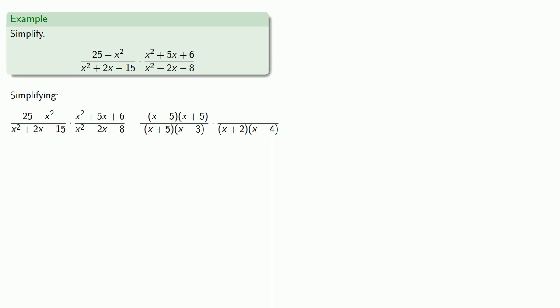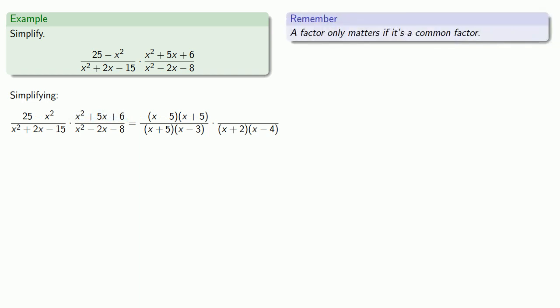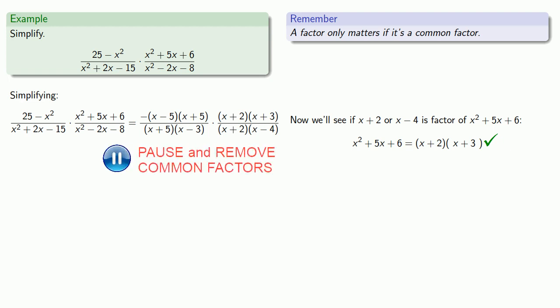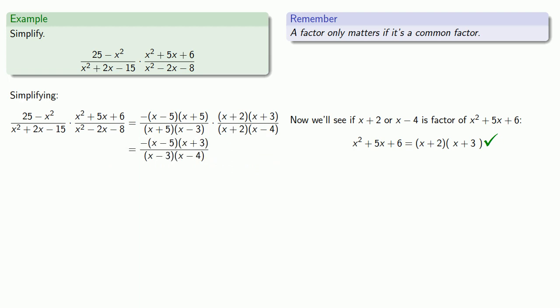We could do the same trial-and-error on x squared plus 5x plus 6, but a factor only matters if it's a common factor. So we check whether x plus 2 is a factor of x squared plus 5x plus 6. Can we write it as x plus 2 times something? We work it out, check it, and confirm that it is a valid factorization. Now we have everything in factored form, so we can remove any common factors.